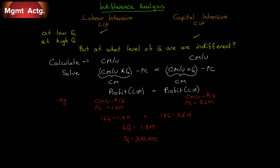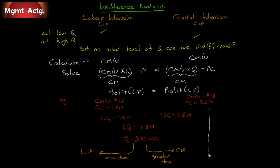Here's what we do with the indifference point. If we expect sales to be less than 300,000 units, we opt for the labor-intensive process because it'll be more profitable. If we think sales will be above 300,000 units, we opt for the capital-intensive process. In graphical form, at a quantity of 300,000 we are indifferent. Firm 1 has fixed costs of $1.8 million and its profit line passes through that indifference point.